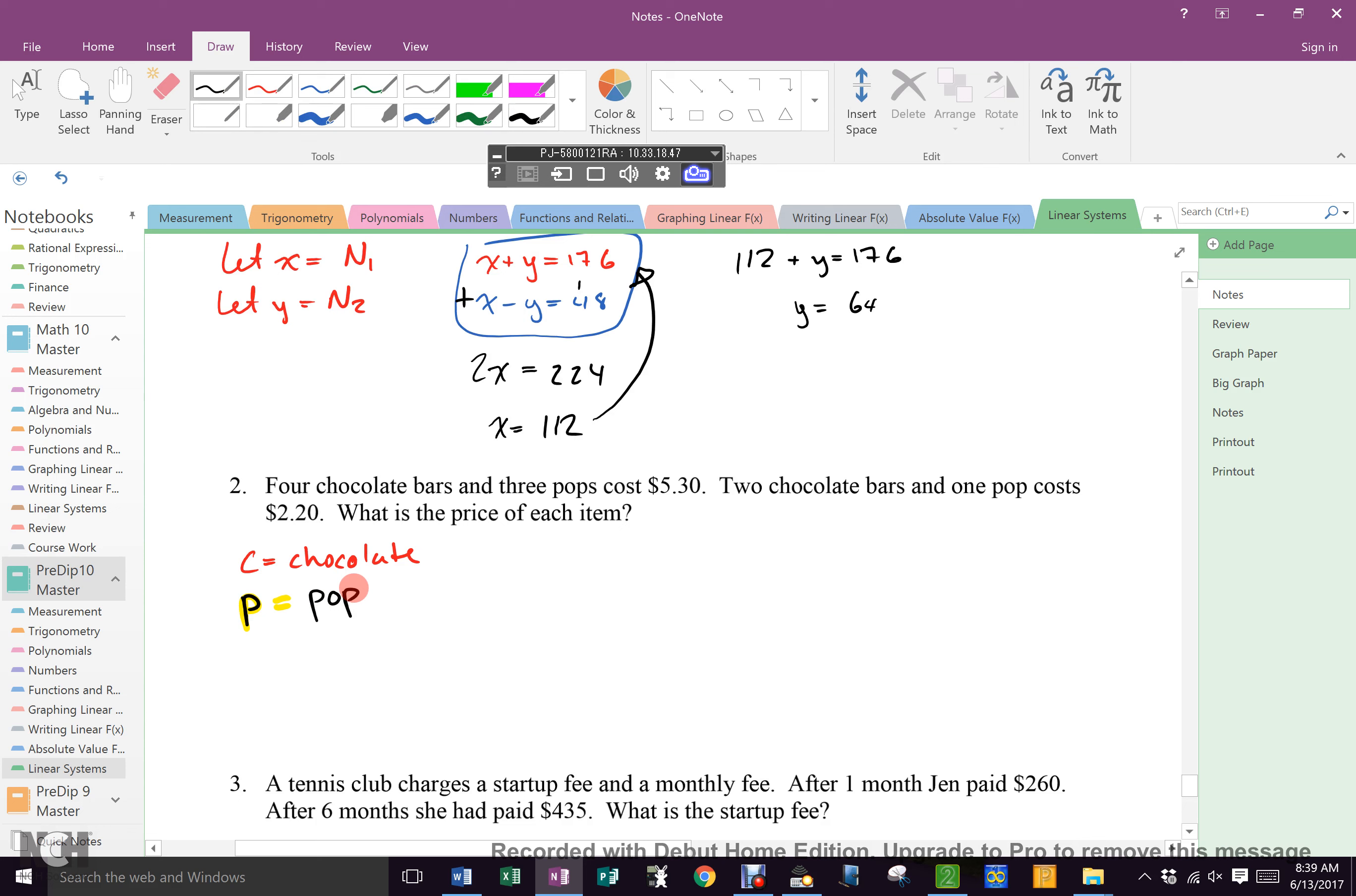Now, what do I know about chocolate bars and pop? 4C. 3P. 530. What else do I know? 2C plus P equals 220. Now, what's the better one to use? Elimination or substitution? Substitution. Why? Because they don't cancel and P equals 220 minus 2C, doesn't it? Right? So, what do I do with that expression? Where does it go? Back up there. And I use it to find C. Once I have C, I put it there and I use it to find P. Everybody gots it? You're going to do that on your own in a minute. Okay?